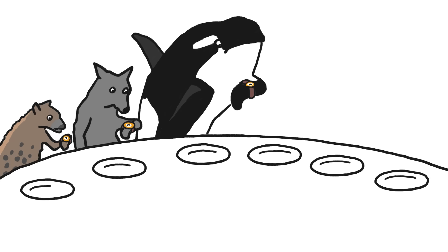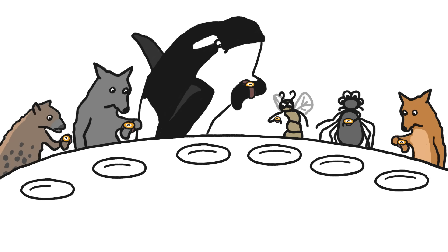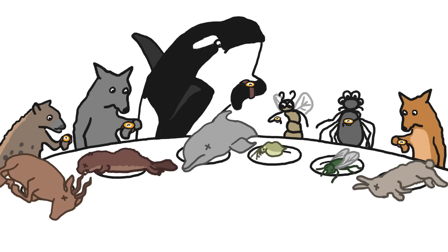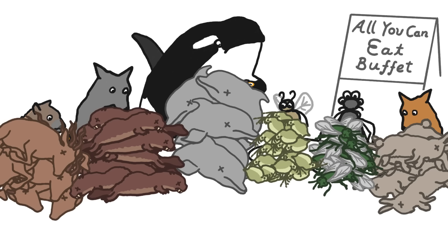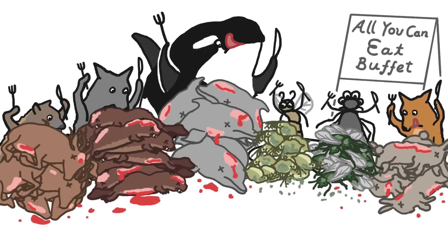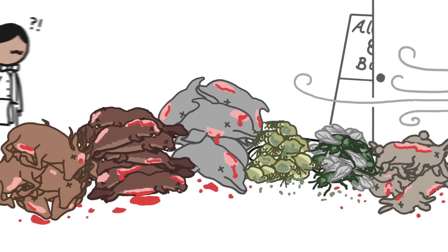The same is true for critters like spotted hyenas, gray wolves, orcas, midges, spiders, and foxes, whose prey also takes time to dismantle. When there's plenty of prey to be had, these animals will often kill more prey than they can eat, consuming the best bits and leaving the rest barely touched.